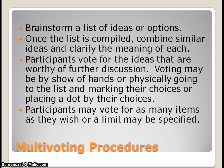Participants then vote for ideas they feel worthy of further discussion. Voting may be a show of hands, or group members can physically go to the list and mark their choices. Multi-voting can include several different ways of marking — sometimes colored dots, where red dots indicate everyone's first choice, yellow for second, and blue for third. You can also use sticky notes or simply list choices by name or topic if dots aren't available.